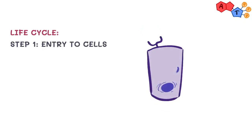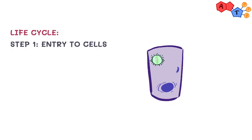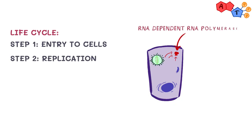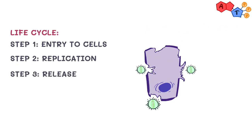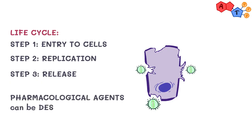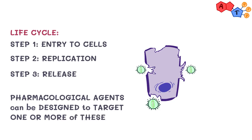For the life cycle, and like many other viruses, coronavirus goes through three steps. Step 1 is entry to the cells, and studies have shown that the coronavirus uses the ACE2 receptor to enter the cell. Step 2 is replication, and here it uses RNA-dependent RNA polymerase. And lastly, step 3 is where release happens and the virus exits the cell. Theoretically speaking, pharmacological agents can be designed to target one or more of these steps.